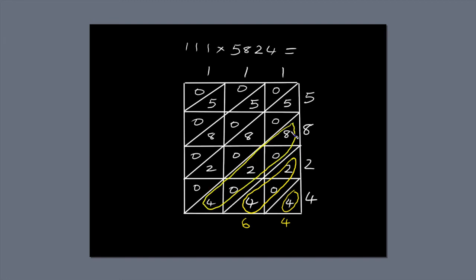8 plus 2 plus 4 is 14. Write the 4 below the diagonal and carry the 1 across to the next diagonal. 1 plus 5 plus 8 plus 2 is 16. Write the 6 next to the diagonal and carry the 1 over to the next diagonal. 1 plus 5 plus 8 is 14. Write the 4 next to the diagonal and carry the 1 over to the next diagonal.